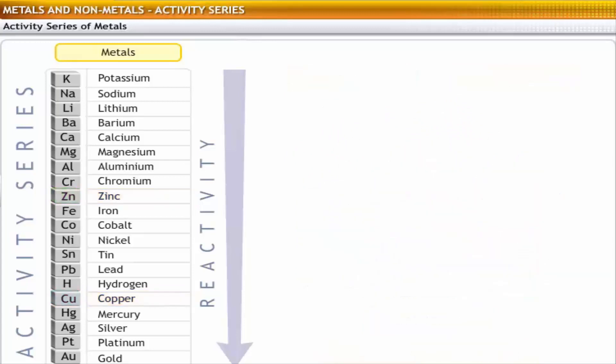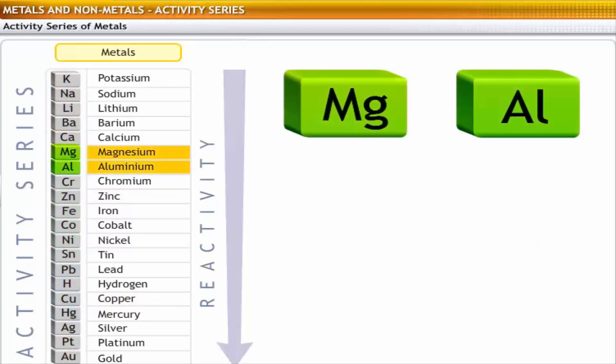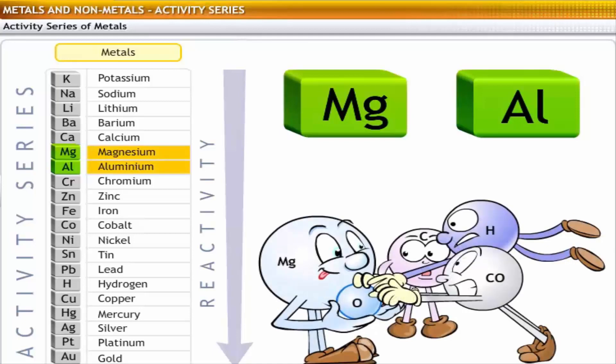As you move down the series, oxides of highly reactive metals like magnesium and aluminium are not reduced easily, either by hydrogen, carbon or carbon monoxide.